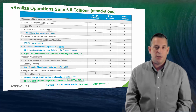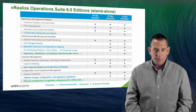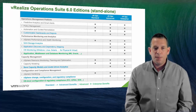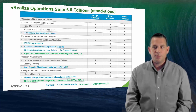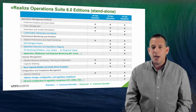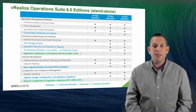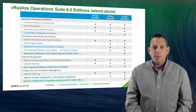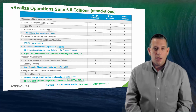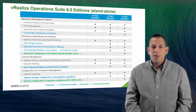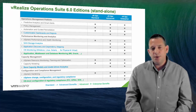As a standalone product, vRealize Operations has three editions: Standard, Advanced, and Enterprise. The Standard edition provides out-of-the-box performance monitoring, analytics, along with basic capacity management and planning, as well as basic vSphere hardening and compliance oversight.